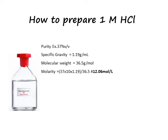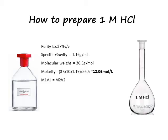Once you know the molarity of concentrated hydrochloric acid, it is easy to calculate the required volume to be transferred using the equation M1V1 = M2V2. Here, V1 is the volume of the required solution, M1 is the concentration of the required solution — that is 1 mol per litre — M2 is the concentration of the stock hydrochloric acid, and V2 is the required volume to be transferred. Enter all these values into the equation to get the volume to be transferred.